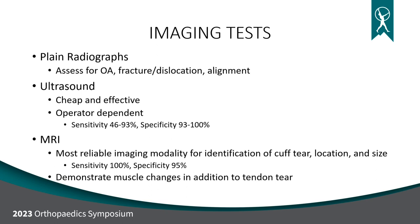MRI is our gold standard, with sensitivity of 100% and specificity of 95%. It gives far more information: you can identify whether there's a tear, where it is, and its size. You can also see arthritis not picked up on x-ray, biceps pathology, and the AC joint. However, it is more expensive, takes more time, and some patients can't tolerate the small tube.